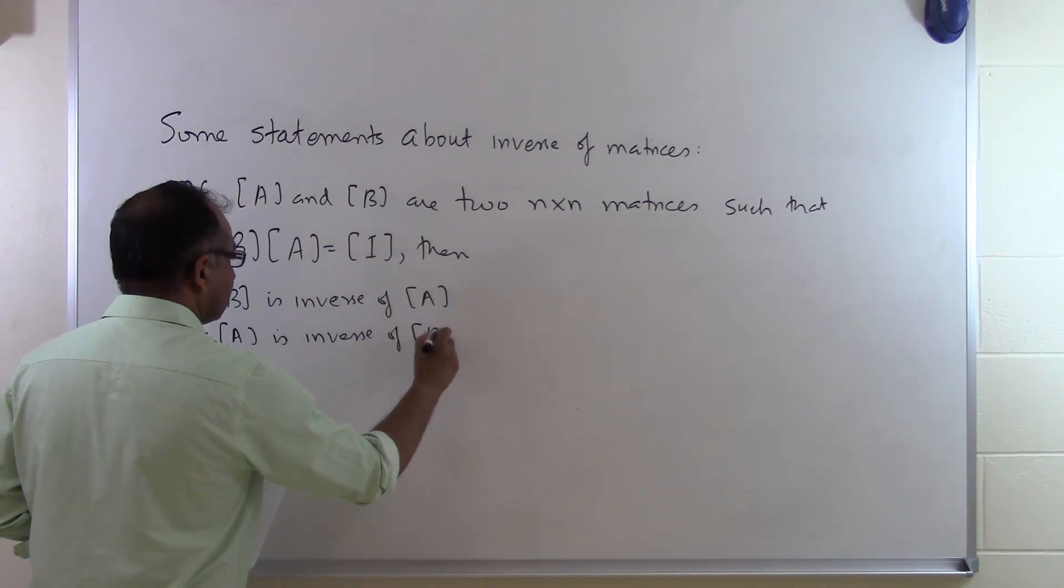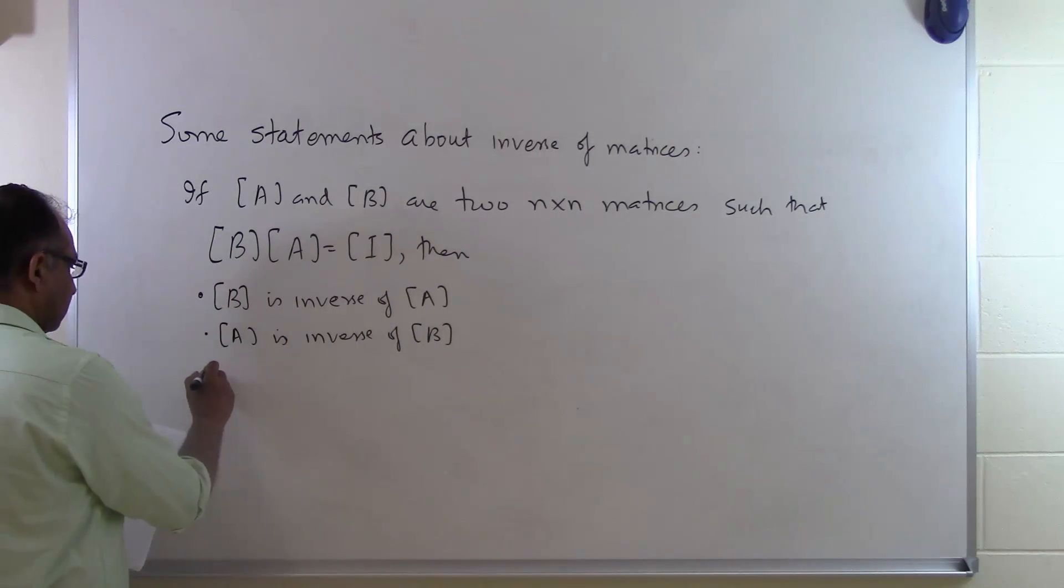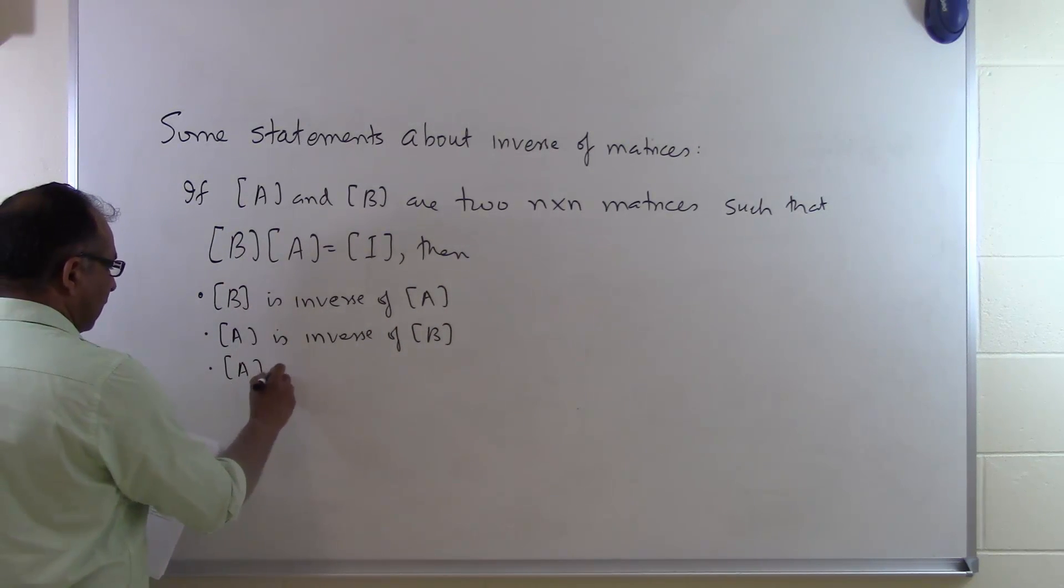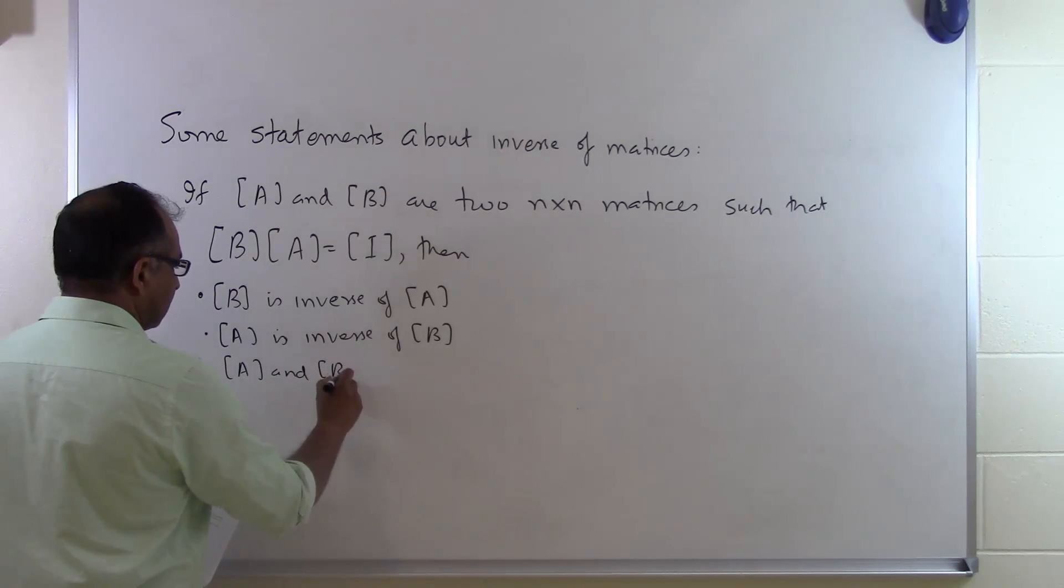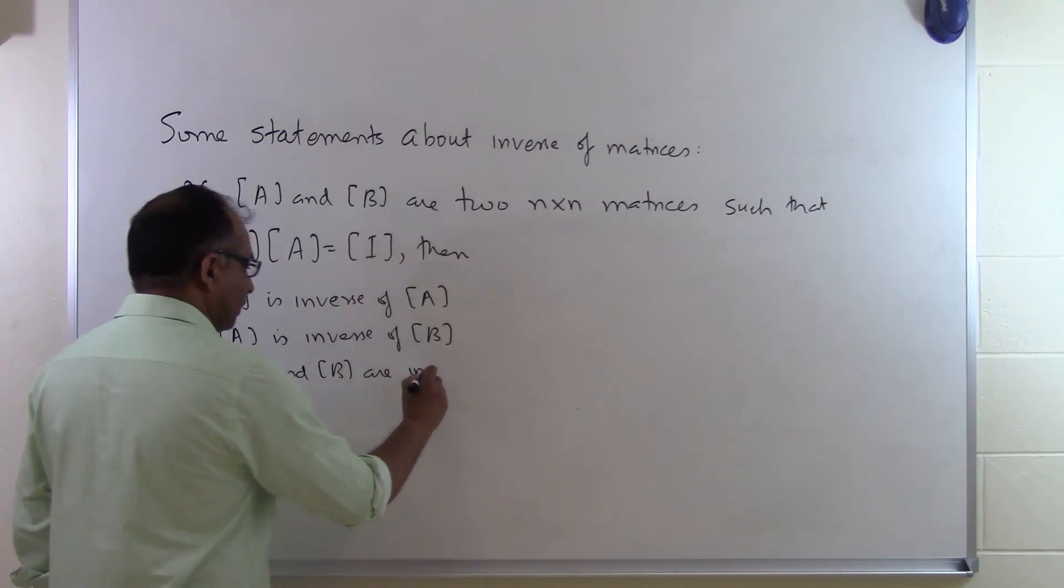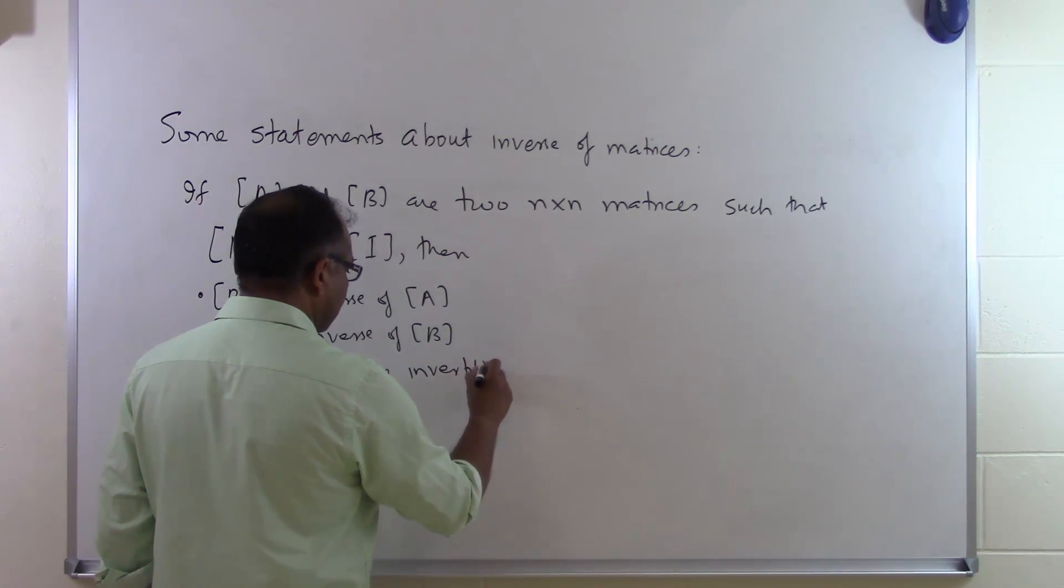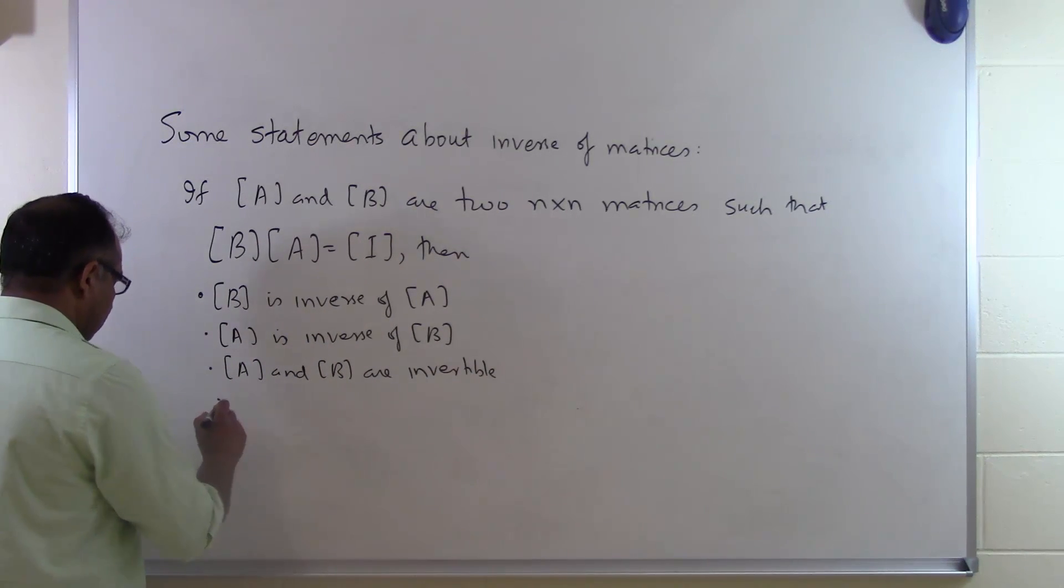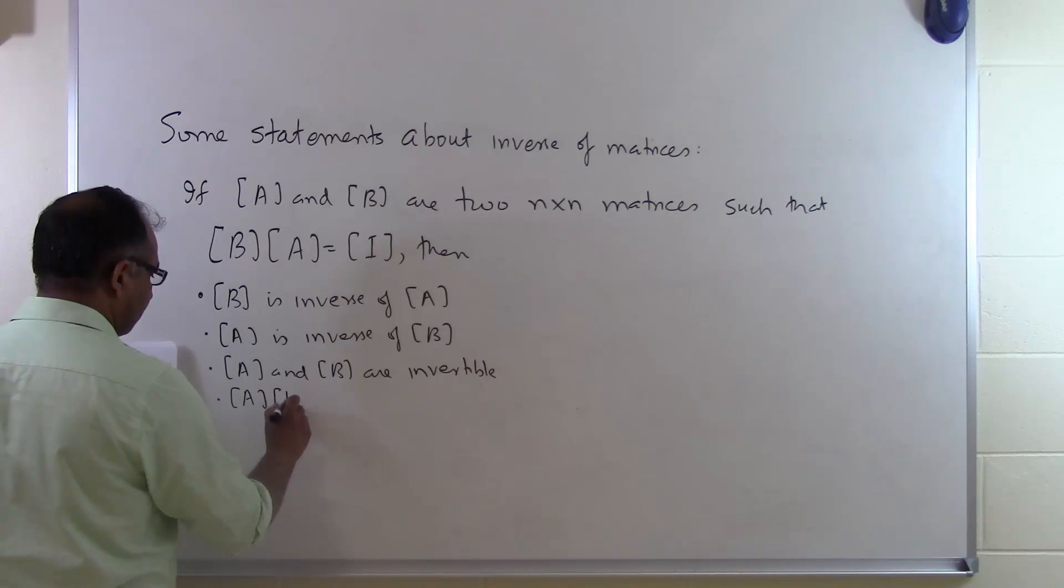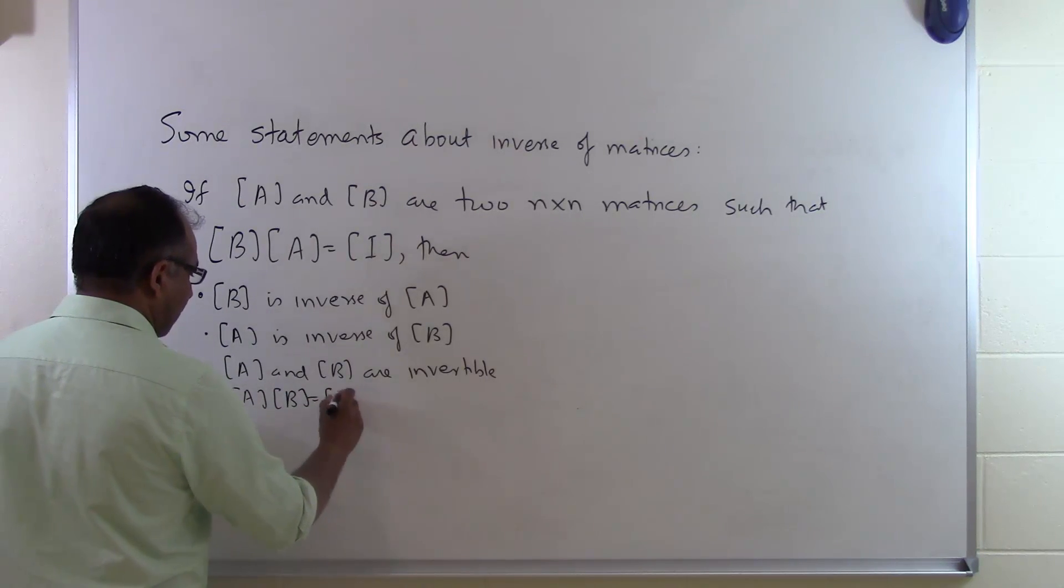A and B are invertible, that means they can be inverted or you can find the inverse. And also we can say A times B is equal to I.